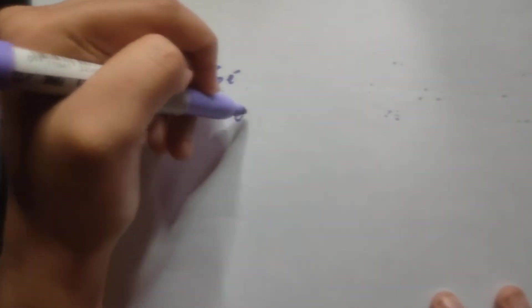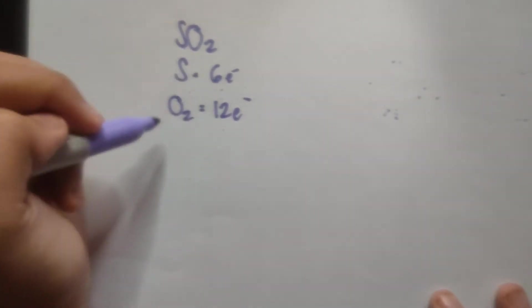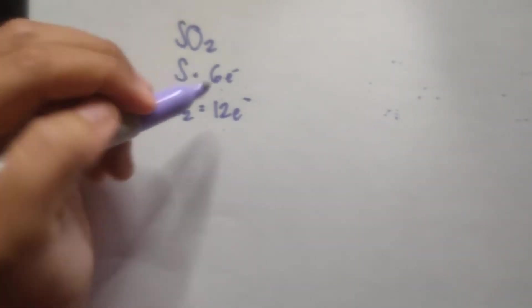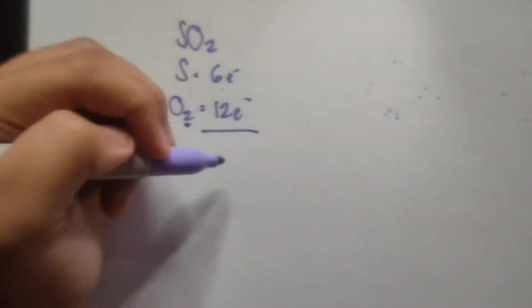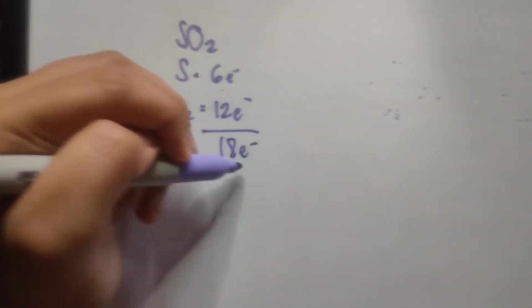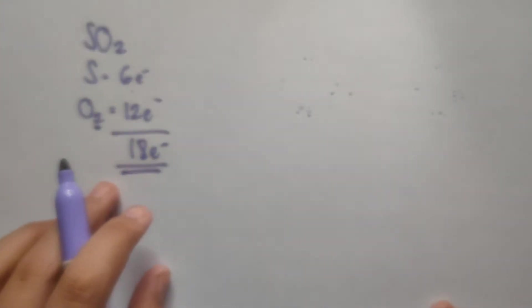Here we have SO2. So it's important that we account first for the number of electrons for each atom. Sulfur has 6 electrons, oxygen has 6 valence electrons, but there are 2 units of oxygen, so it's going to total to 12 valence electrons. Then you total that, and the whole structure should have a total of 18 valence electrons.